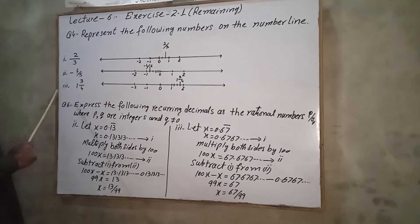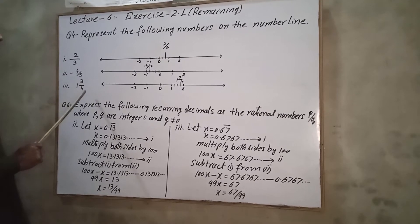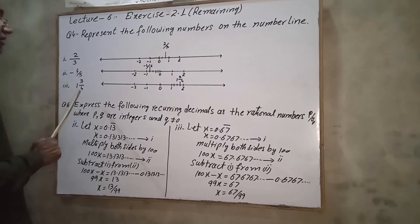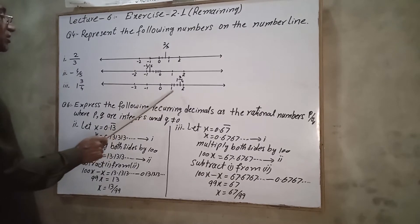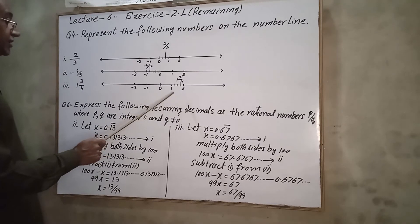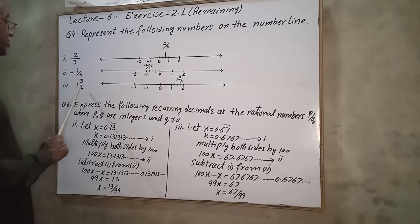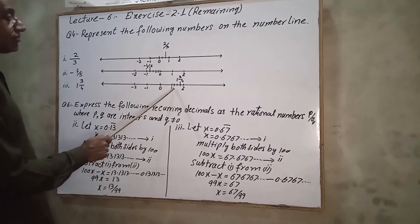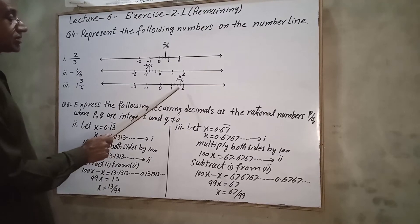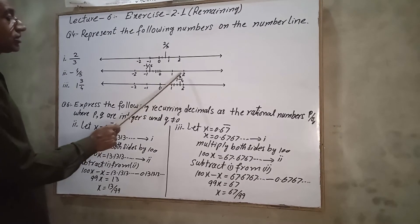Now the third part: 1 and 3/4. This is a positive number greater than 1. It lies between 1 and 2. We take the interval between 1 and 2 and divide it into 4 equal parts: 1, 2, 3, 4. Our required point is 3 parts from 1, so this represents 1 whole and 3/4.